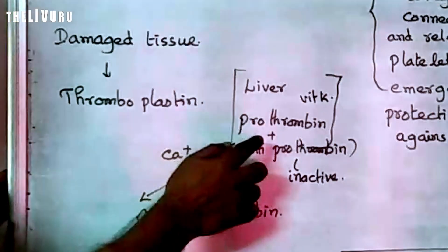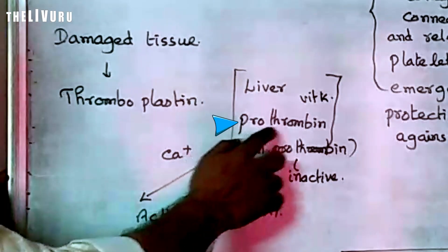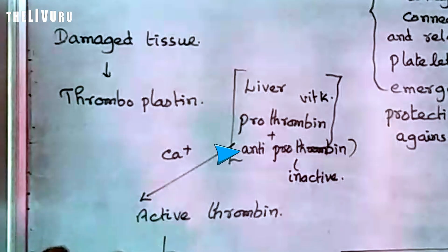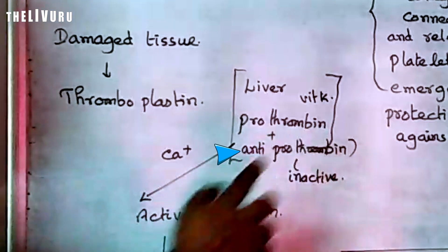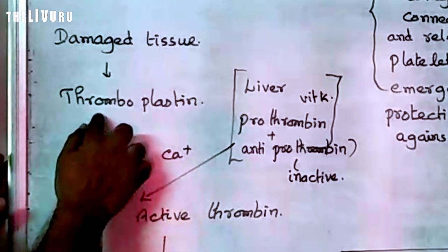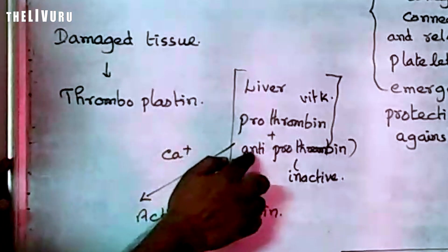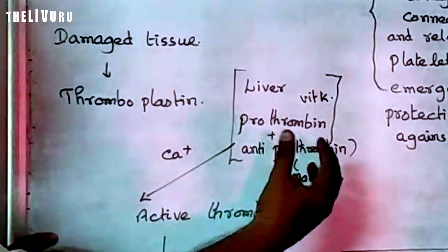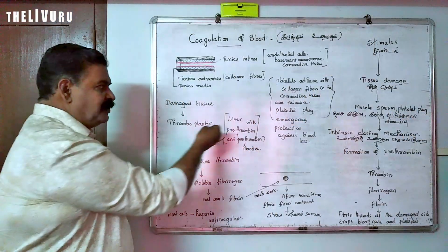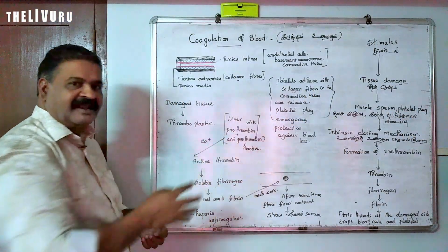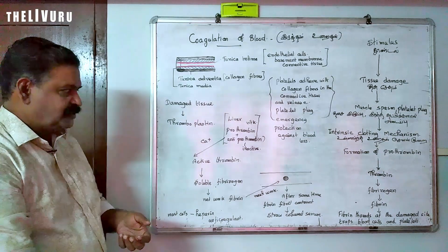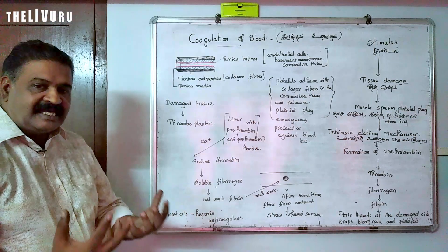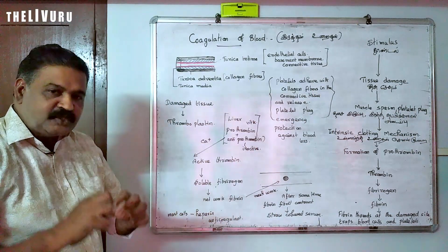In the presence of calcium ions and vitamin K, thromboplastin converts the inactive prothrombin into active thrombin. Thromboplastin reacts with anti-prothrombin to produce active thrombin.